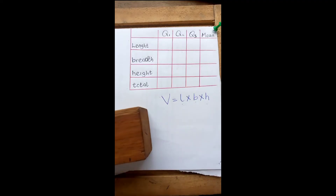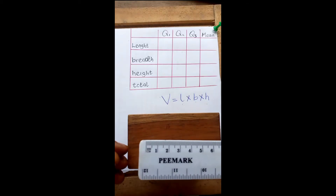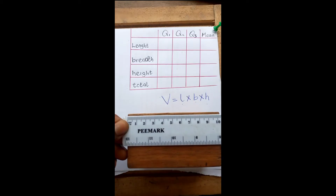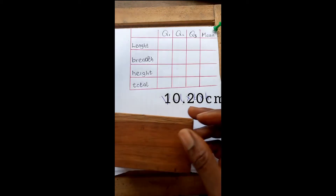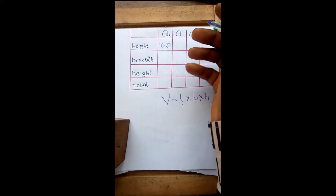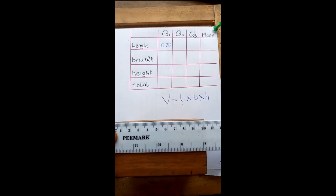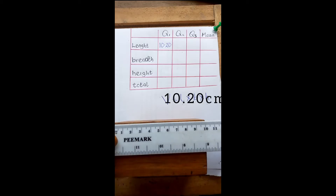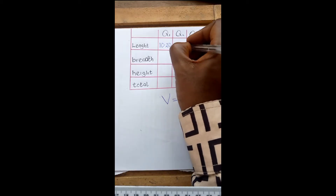The length of a rectangle is the longest part of the rectangle. You place your meter rule close to it to get the length. Here I have 10.2 cm, and I write 10.20 cm. Place it again and get the second value — I still have 10.20 cm.